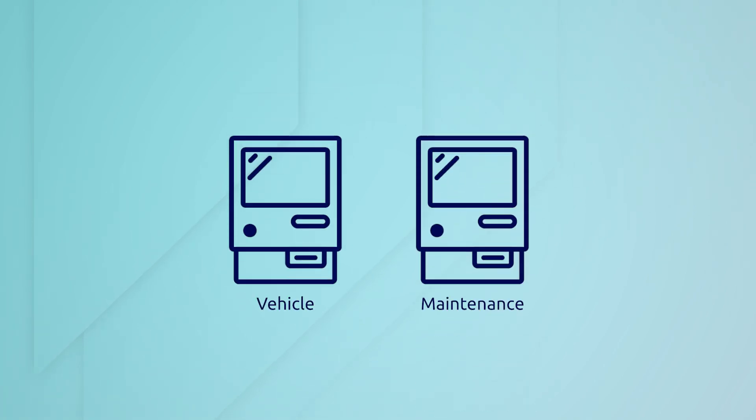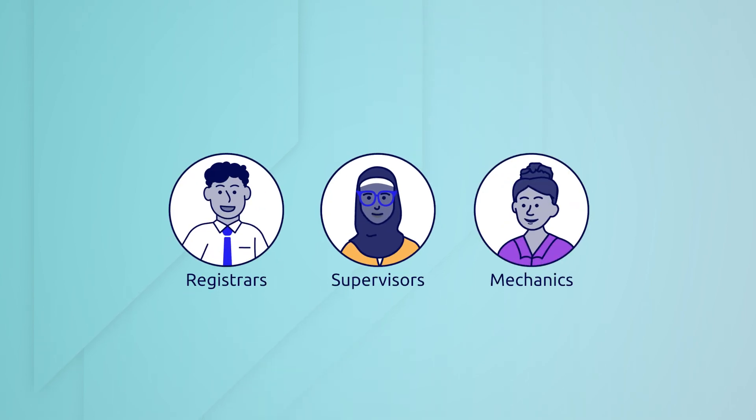To understand how record types work in practice, let's look at a sample Acme Automobile app. Acme Automobile is a corporate fleet management company. They built an app to help them unify data from several legacy systems and provide their employees, supervisors, registrars, and mechanics with the tools to act upon and review their data.